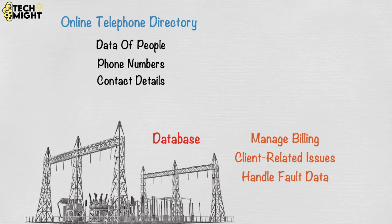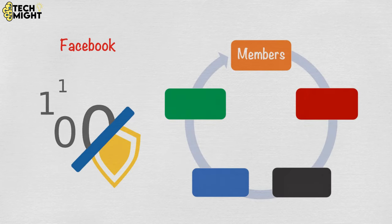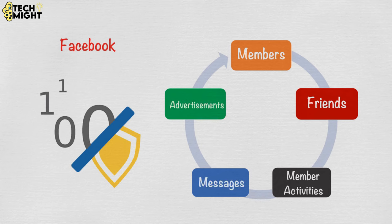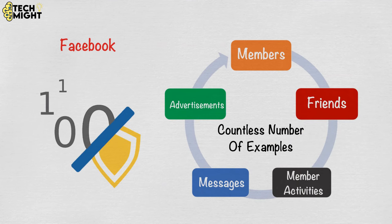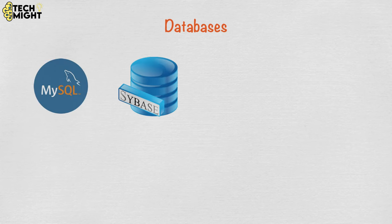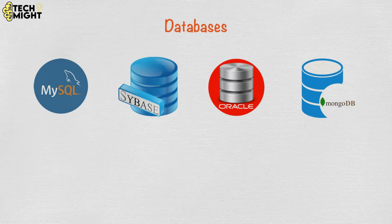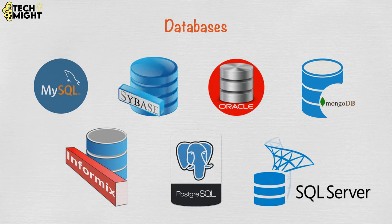Your electricity service provider uses a database to manage billing, client-related issues, and fault data. Let us also consider Facebook — it needs to store, manipulate, and present data related to members, their friends, member activities, messages, advertisements, and a lot more. We can provide a countless number of examples for the usage of databases. There are many databases available like MySQL, Sybase, Oracle, MongoDB, Informix, PostgreSQL, SQL Server, etc.